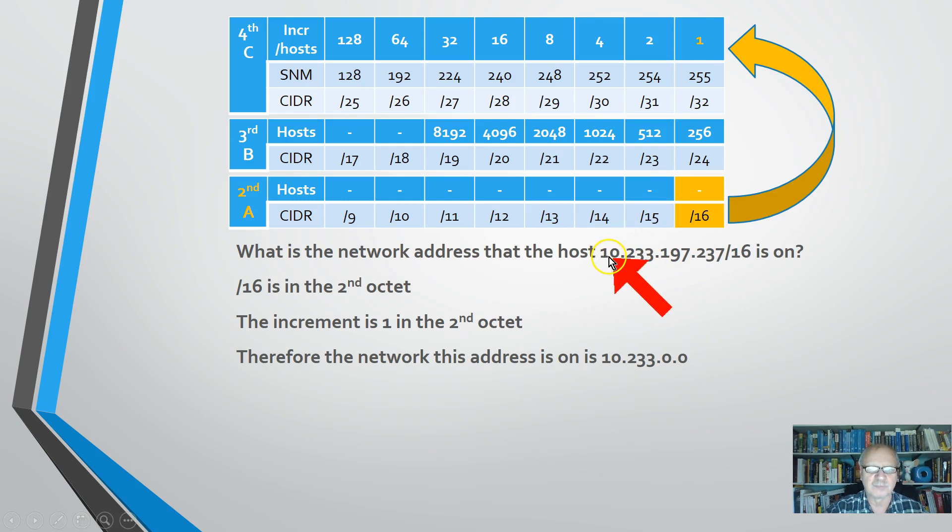If the increments are 1 in the second octet, the first network address will be 10.0. The second one would be 10.1, and then 10.2, 10.3, and so forth. So 10.232 is a network, 10.233 is a network. And hey, look at that, we are on 10.233.